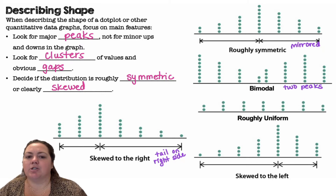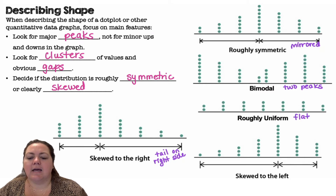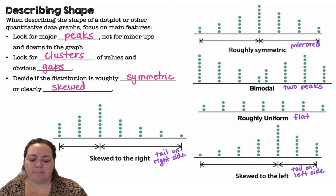Bimodal is when it has two peaks. Roughly uniform is when it's kind of flat. And skewed to the left means the tail is going to be on the left side.